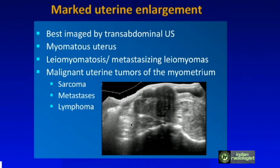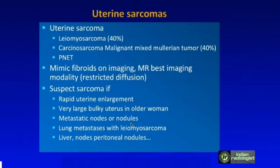Uterine sarcomas are uncommon — the vast majority are leiomyosarcomas, but there are also carcinosarcomas (malignant mixed Müllerian tumors), which occur in older women. They can mimic fibroids on imaging, particularly on ultrasound. MRI is the best imaging modality, especially if restricted diffusion is seen. Suspect sarcoma if there is rapid uterine enlargement, a very large bulky uterus in an older woman, metastatic nodes or nodules, ascites, or distant metastatic disease.